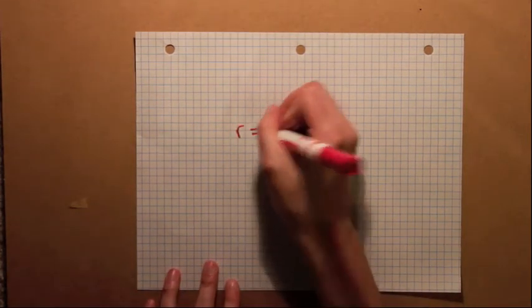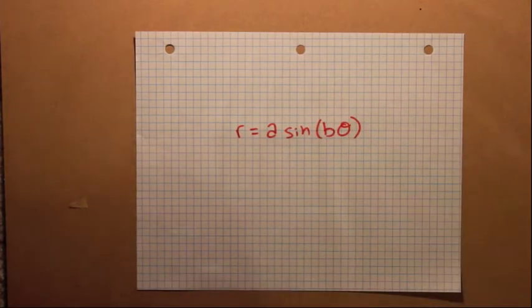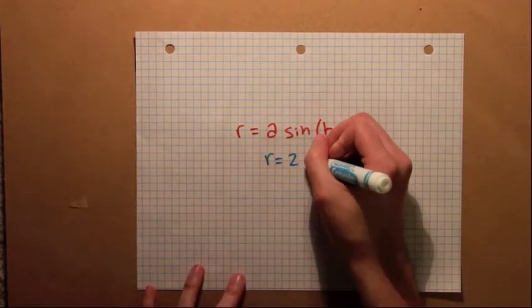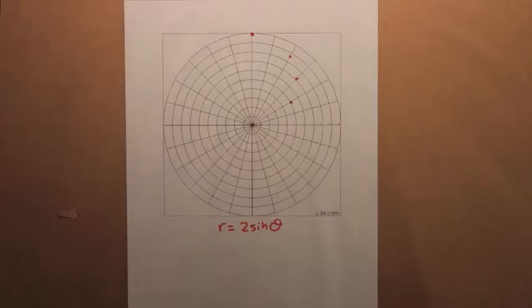So if that didn't work, let's try adding in a variable. If we look at the equation, we could add in a constant in two places, in front of the theta or in front of the sine. If we add in a 2 in front of the sine, make a table, plot the points, we just get a bigger circle.